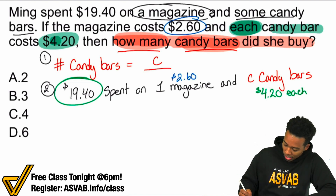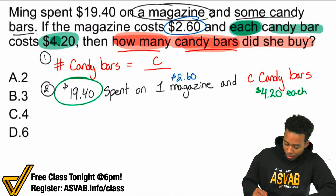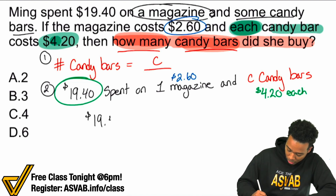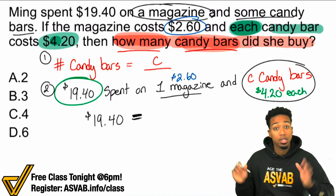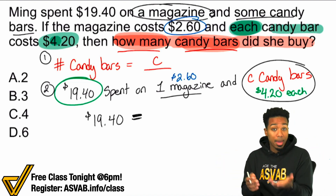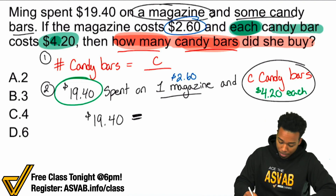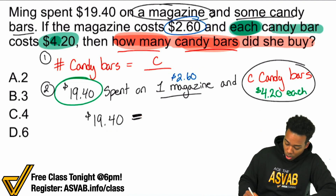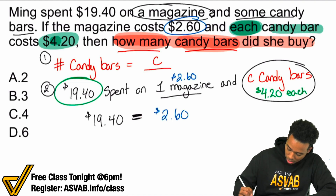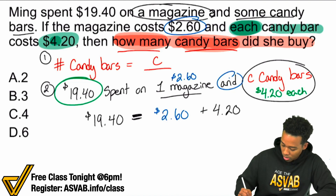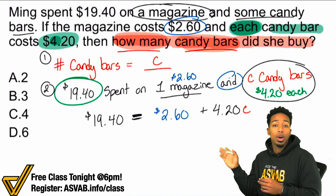So what this all means is we're going to translate this into an equation. The $19.40 Ming spent total is equal to the magazine and the candy bars together. So the equation is: $19.40 equals the cost of the magazine, $2.60, plus C candy bars at $4.20 each — that gives us 4.20 times C. This is just one way to approach the problem.